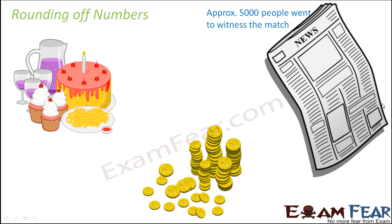Consider organizing a party where you've invited approximately 95 guests. You don't know if all will come, or if one or two extra people might arrive. So you make arrangements for 100 guests — you round 95 up to 100 to keep that extra buffer.